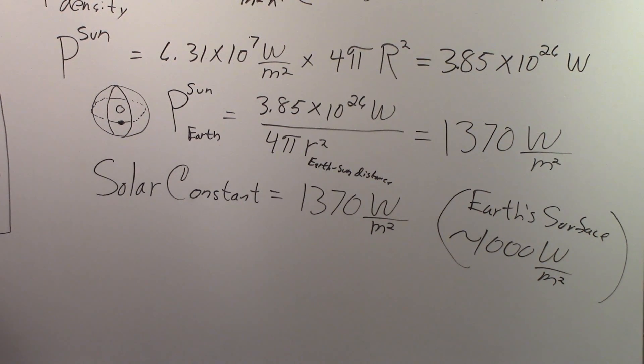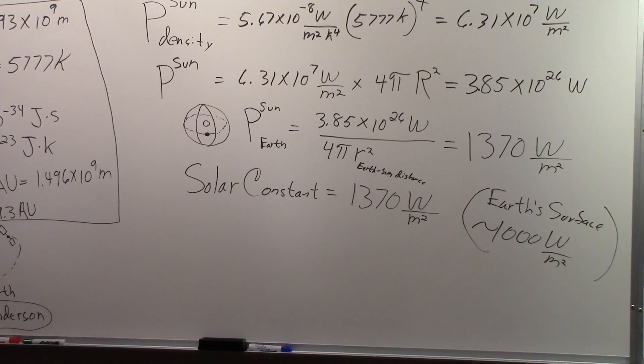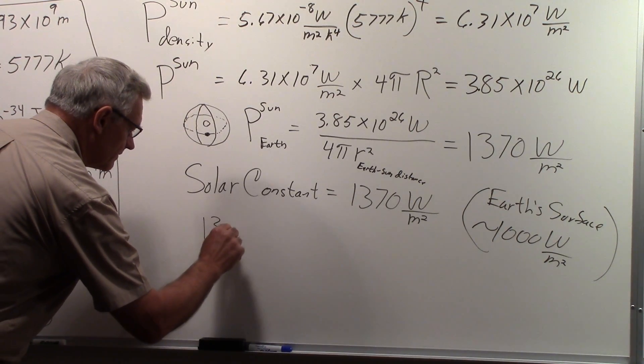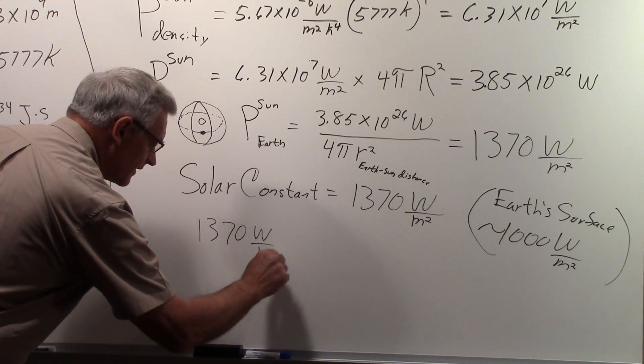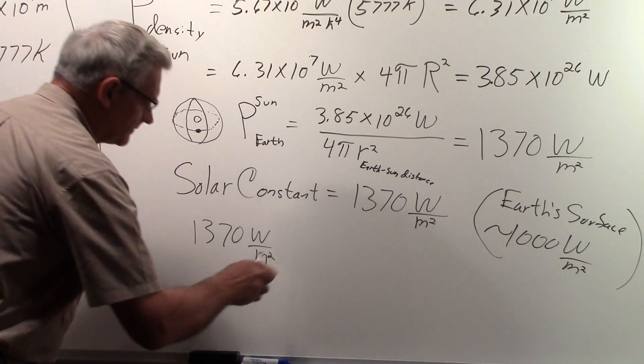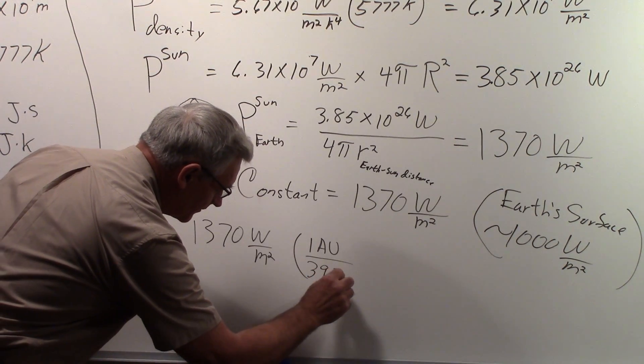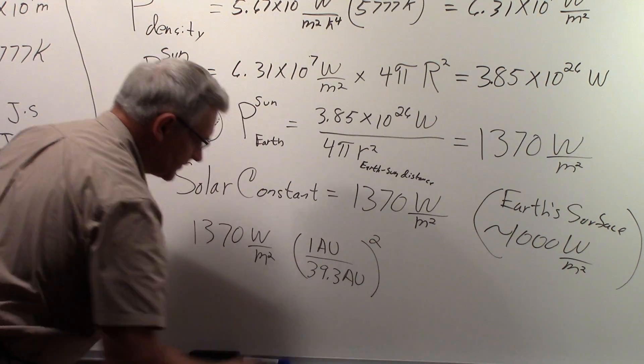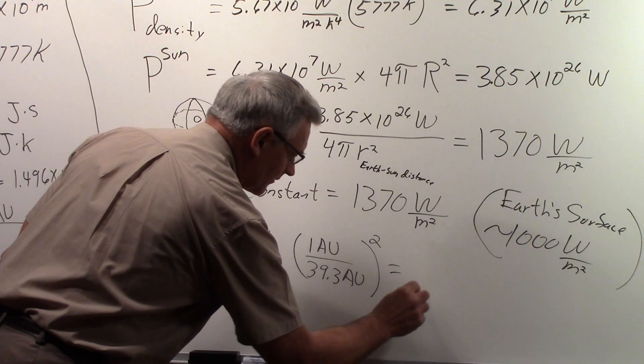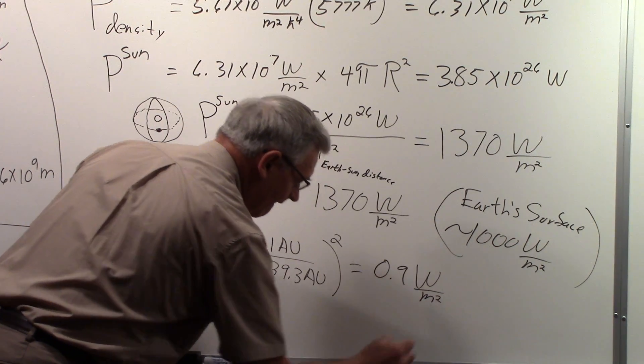Now what would the power density be out at the distance of Pluto? Well, the 1,370 watts per meter squared is for the one astronomical unit that the earth is from the sun. Pluto sun distance is 39.3 times further away. It will go as the distance squared. So if we take one astronomical unit corresponding to this value and divide by 39.3 astronomical units for the distance to Pluto and work that out, we get approximately 0.9 watts per square meter at Pluto.